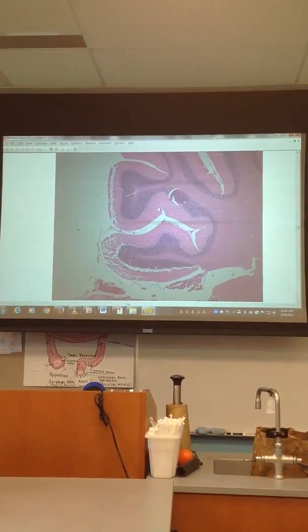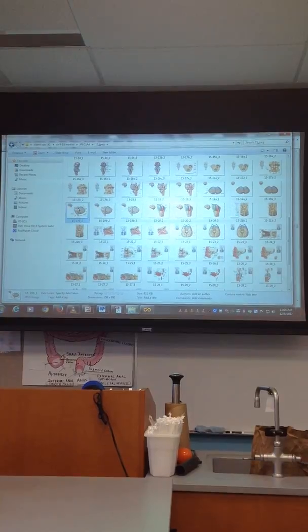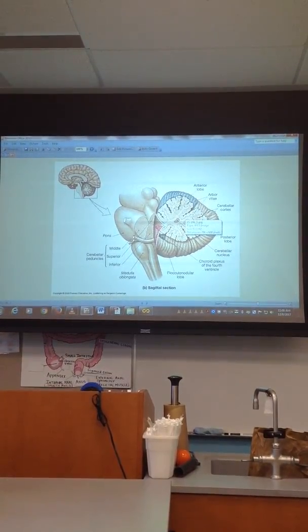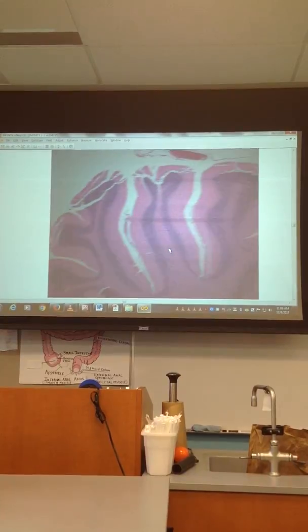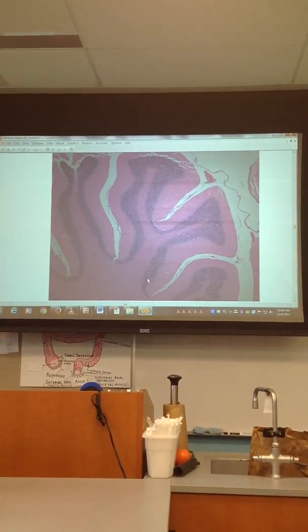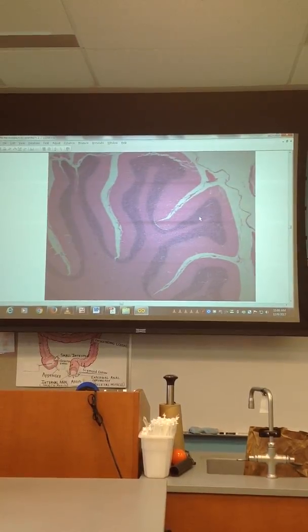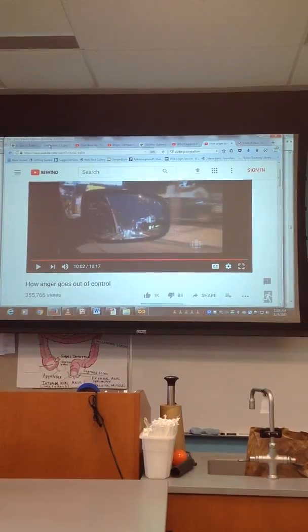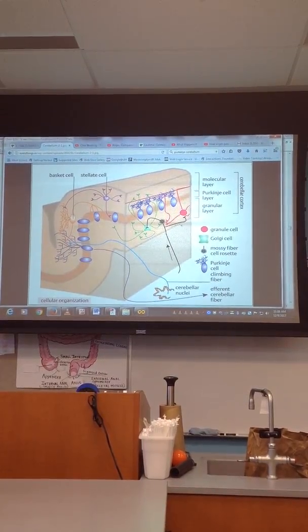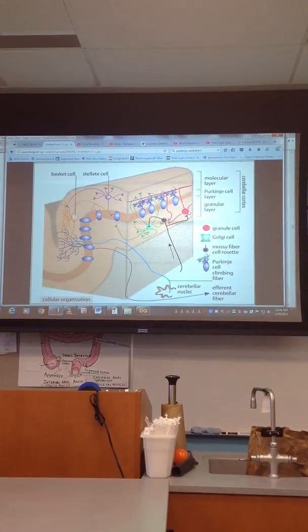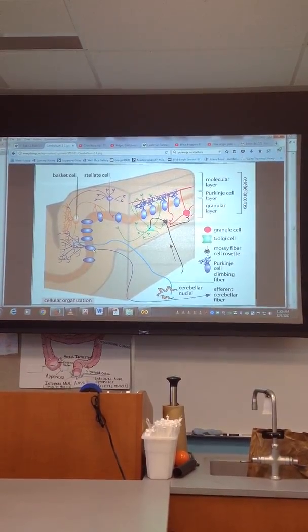And does anybody recognize what the heck this structure is here? Cerebellum. Well, it is part of the brain. You guys remember this image? Three dots and dots. The cerebellum is this. Everybody with me? Cerebellum. Everybody see these guys here? These are called Purkinje cells.